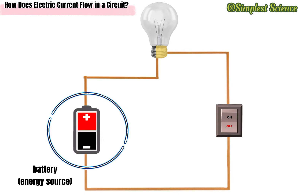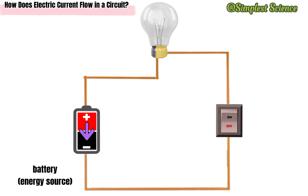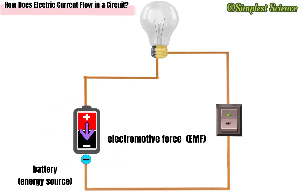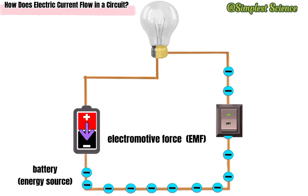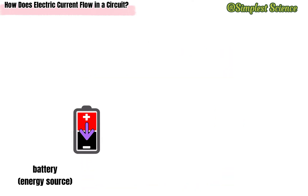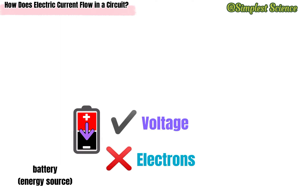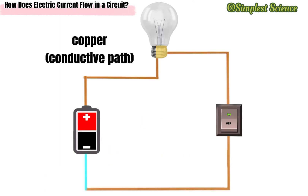The battery is the energy source. It supplies the required electromotive force to cause the electrons to move in the circuit away from its negative terminal and pulls them towards the positive terminal. It is the provider of voltage, not electrons as many would think.